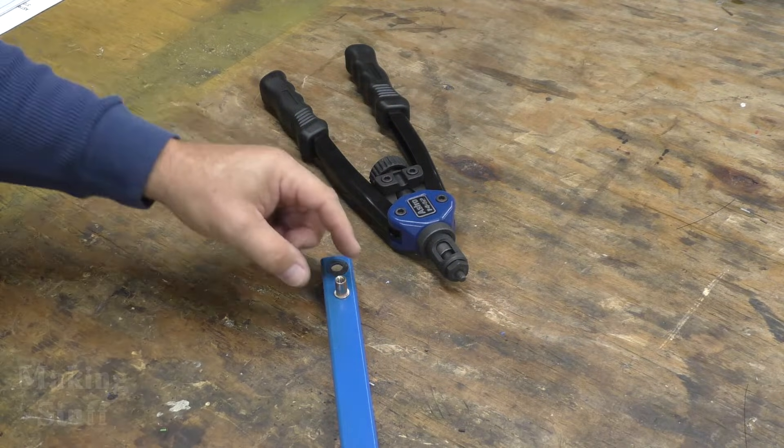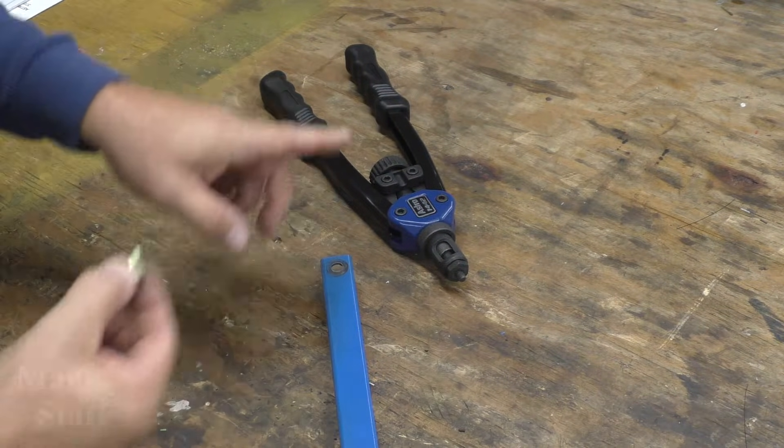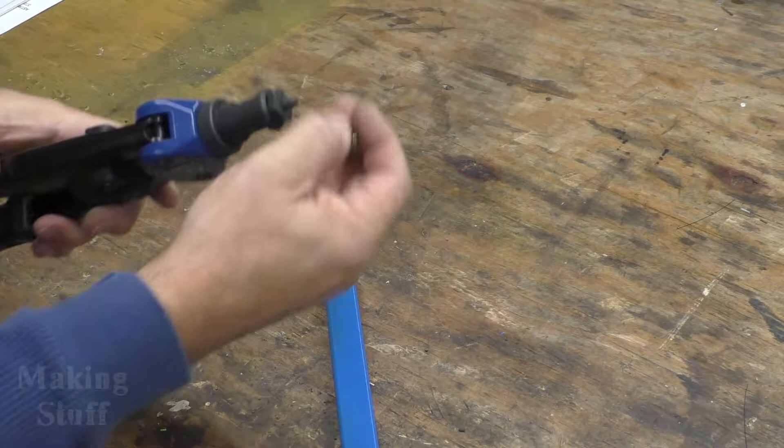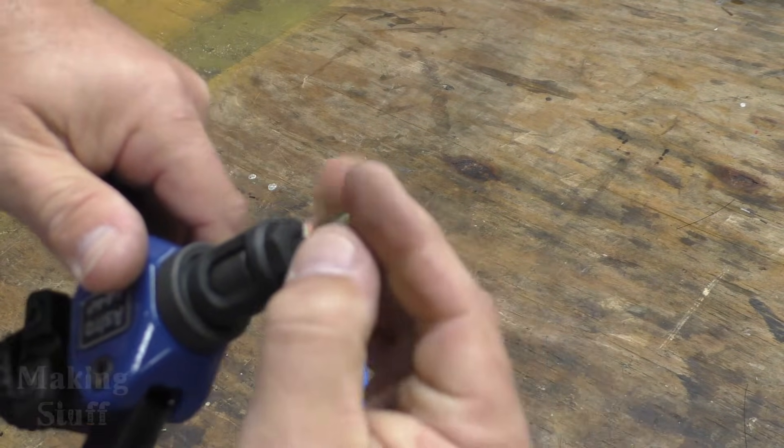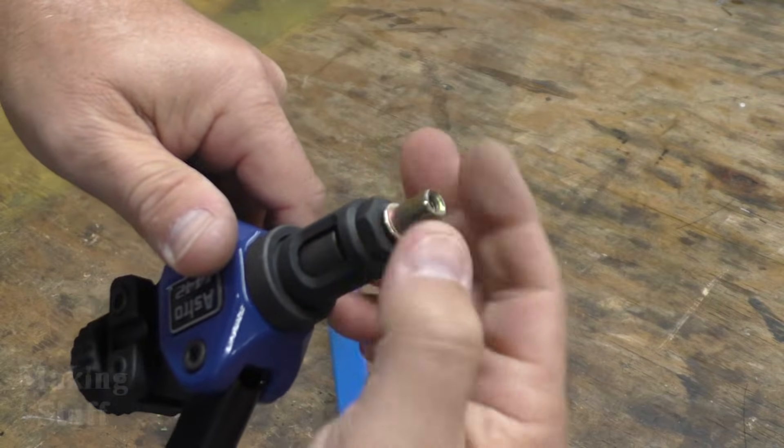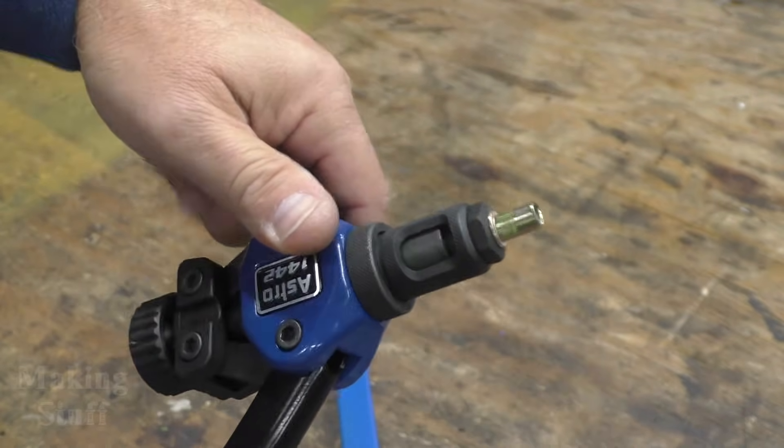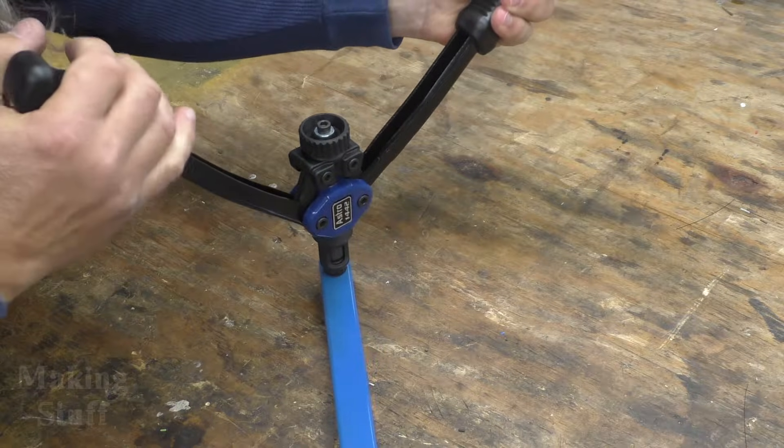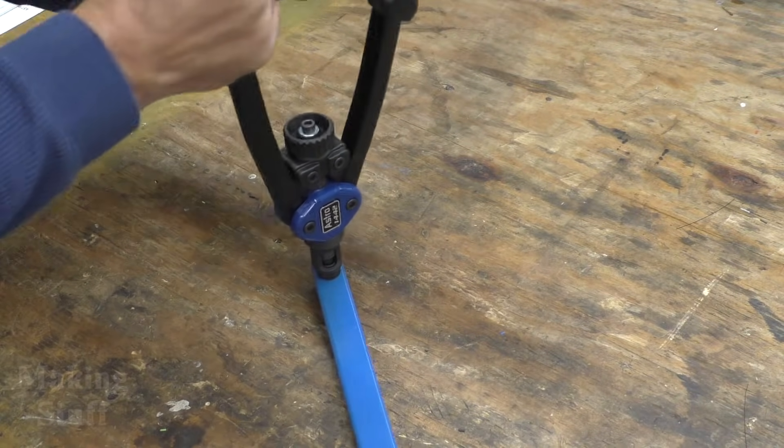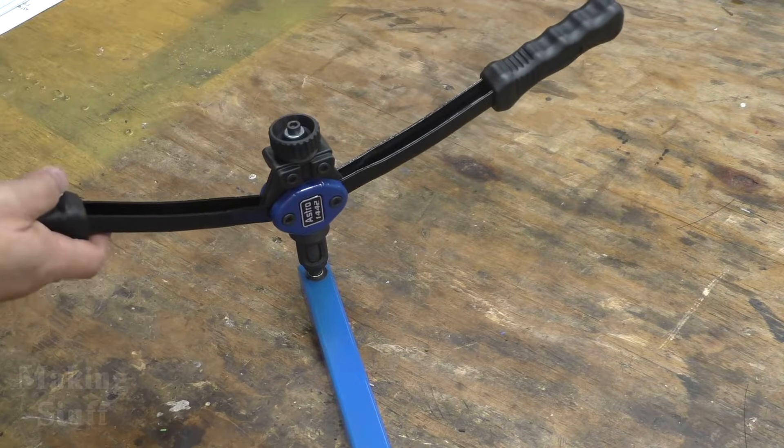So I'm going to show you how this works by inserting this rivet nut into the square tubing that I have right here. And I'm going to start out by screwing the rivet nut on the end of the tool. Then I will just place this into the hole that I have drilled and then clamp it down. And it's just that easy.